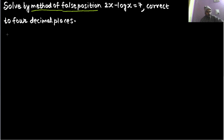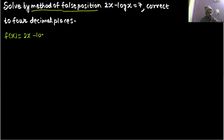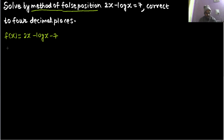So let us write the function once again. The function is f(x) = 2x minus log x minus 7. Now let us check the values at different points so that we get an interval in which the root lies.